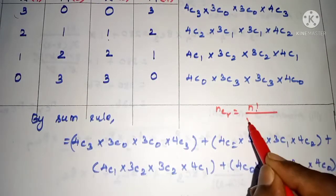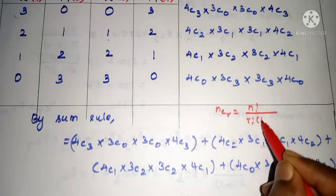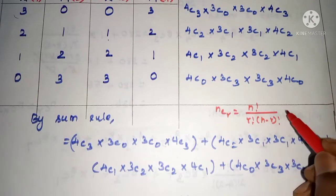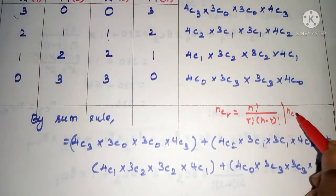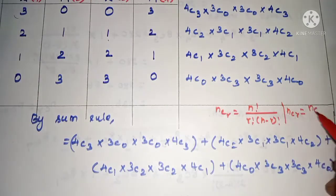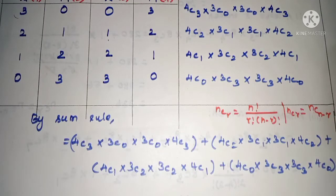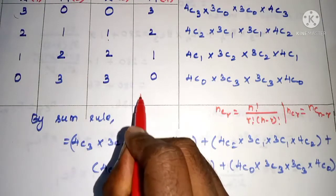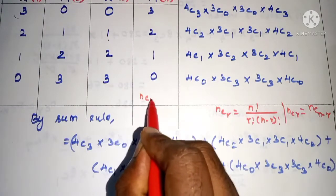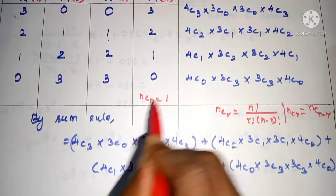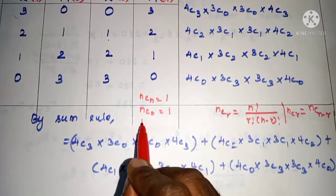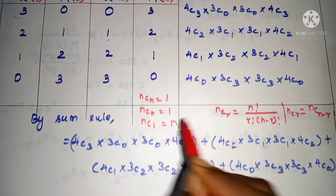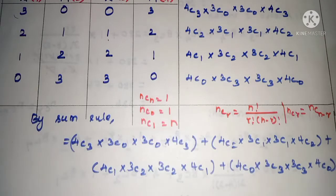We use the formula: nCr = n! / (r! × (n−r)!) and the identity nCr = nC(n−r). Some useful identities: nCn = 1, nC0 = 1, nC1 = n.